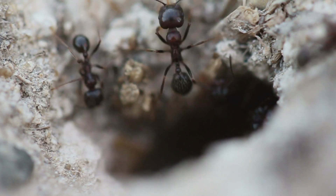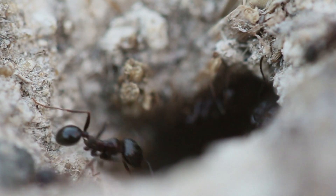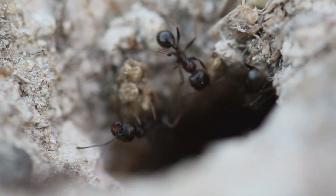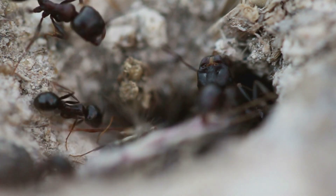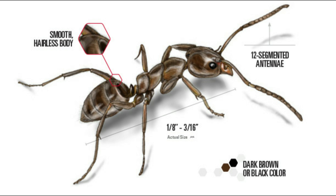A discovery in the year 2000: the largest single expanse of territory belonging to a single colony on planet earth is 3,700 miles or 6,000 kilometers. An invasive species to Europe, their empire stretches from Northern Italy through the south of France along the Atlantic coast of Spain. This is Linepithema humile, aka the Argentine ant.